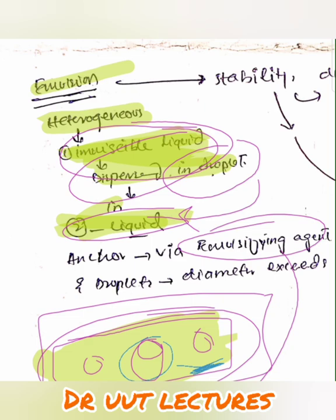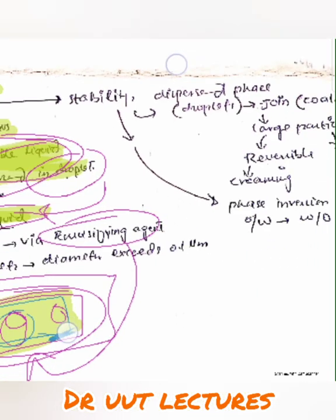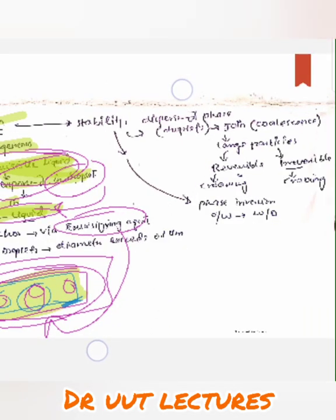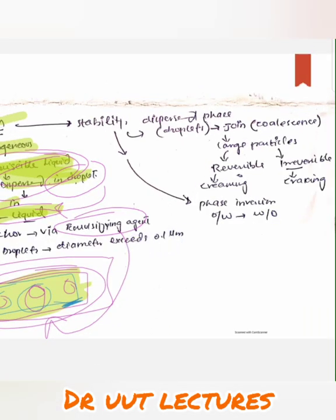If there is a deformity in the connection of the two phases — meaning the droplets are not connecting with the external second phase — then we get stability disorders. There are certain types of stability disorders: dispersed phase type, irreversible type, and phase inversion type.